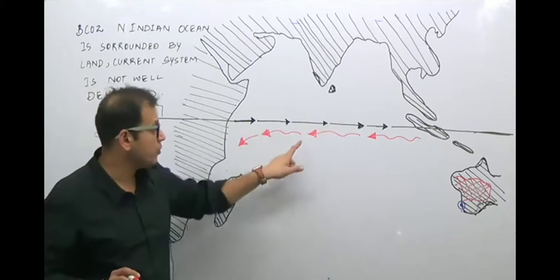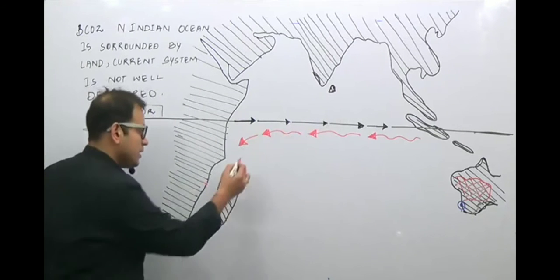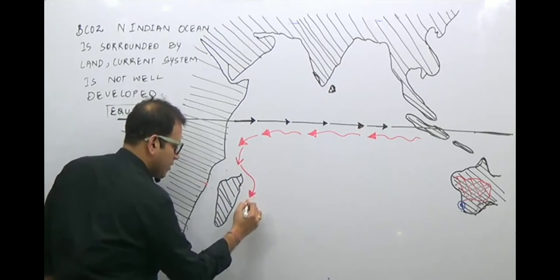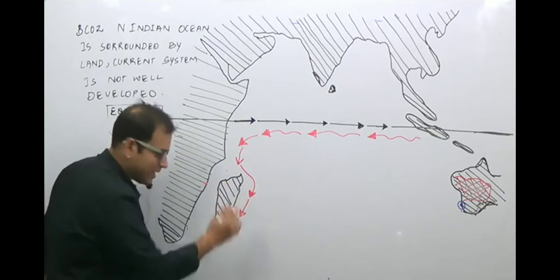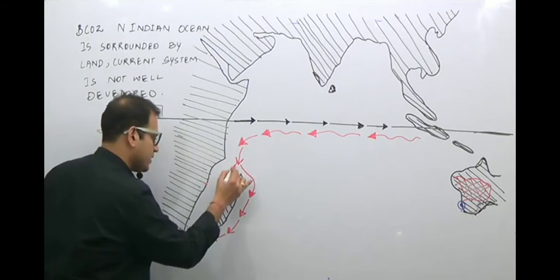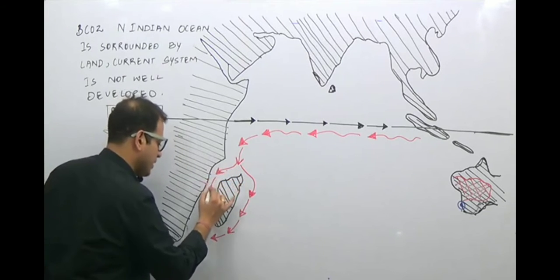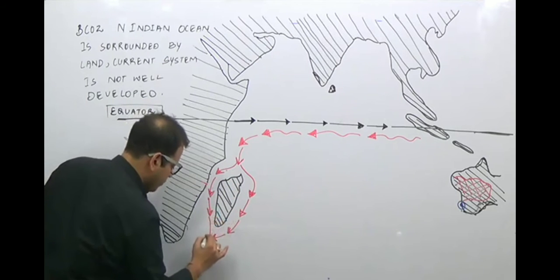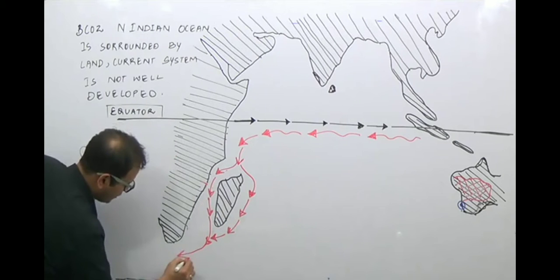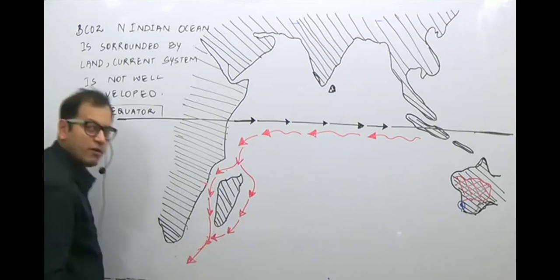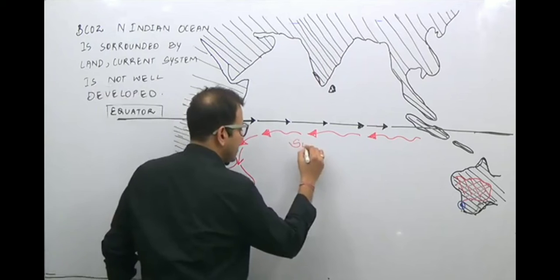The South Equatorial Current water comes and it is bifurcated into two parts. One part goes to the eastern side of Madagascar island, and the other goes inside the region between the island of Madagascar and the African mainland. After that, both ocean currents join together and flow downwards. This is the South Equatorial Current.